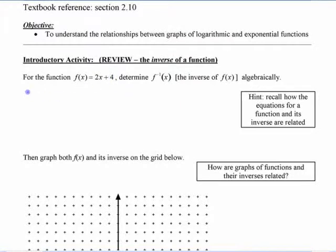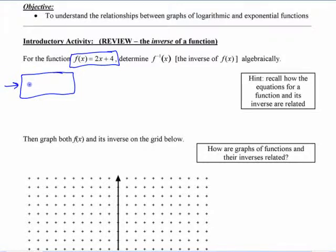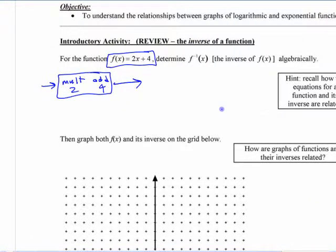If you have a function — use a simple one like y equals 2x plus 4 — think of a function as a rule, or even a machine, as your teacher might have modeled it. You have a machine that takes whatever number you put in, multiplies by 2, and then adds 4, and a number comes out. The inverse of that is going to undo that.